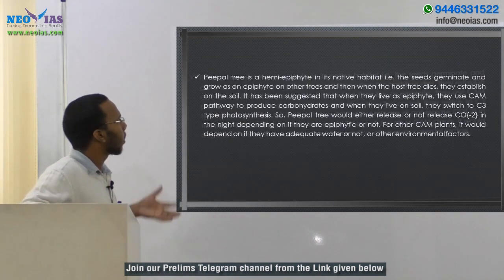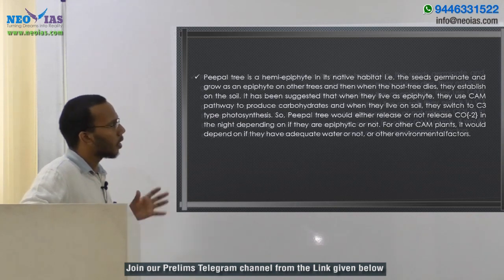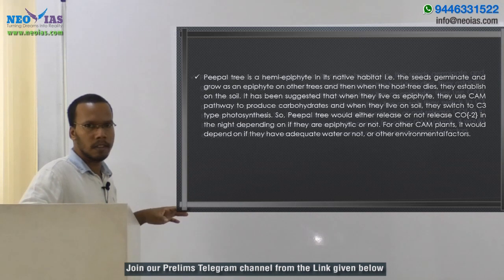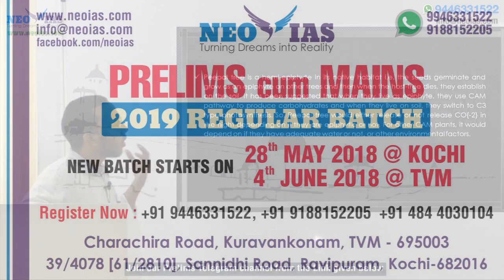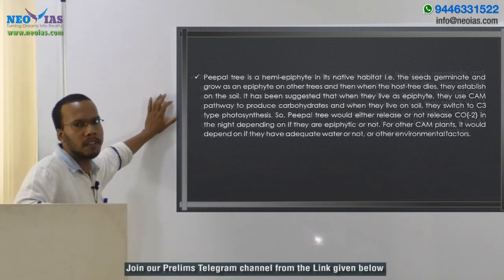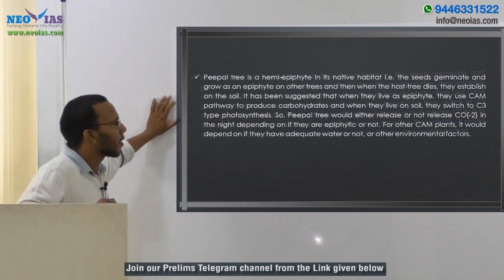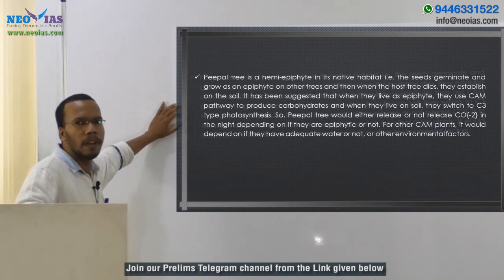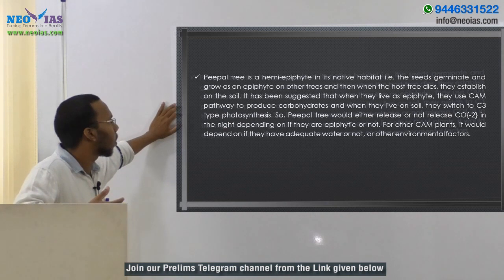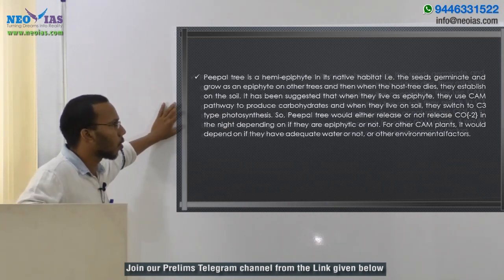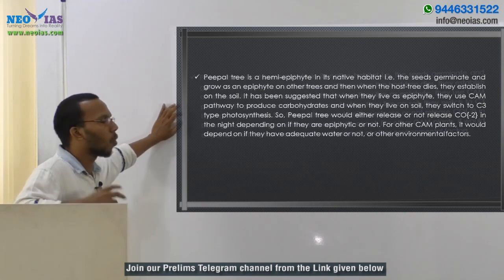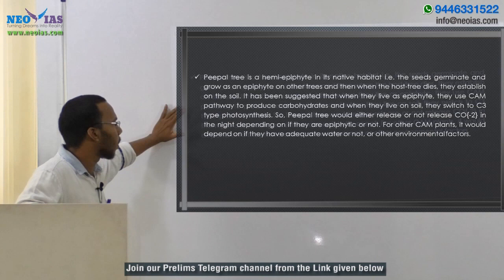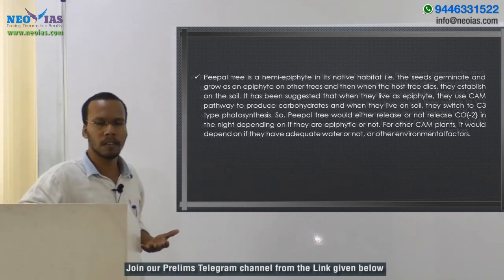The peeple tree is a hemi-epiphyte in its native habitat — the seeds germinate and grow as an epiphyte on other trees, and when the host tree dies they establish on the soil. It has been suggested that when living as an epiphyte they use the CAM pathway to produce carbohydrates, and when living on soil they switch to the C3 pathway. So whether a peeple tree releases CO2 at night depends on whether it is in its epiphytic state or not.